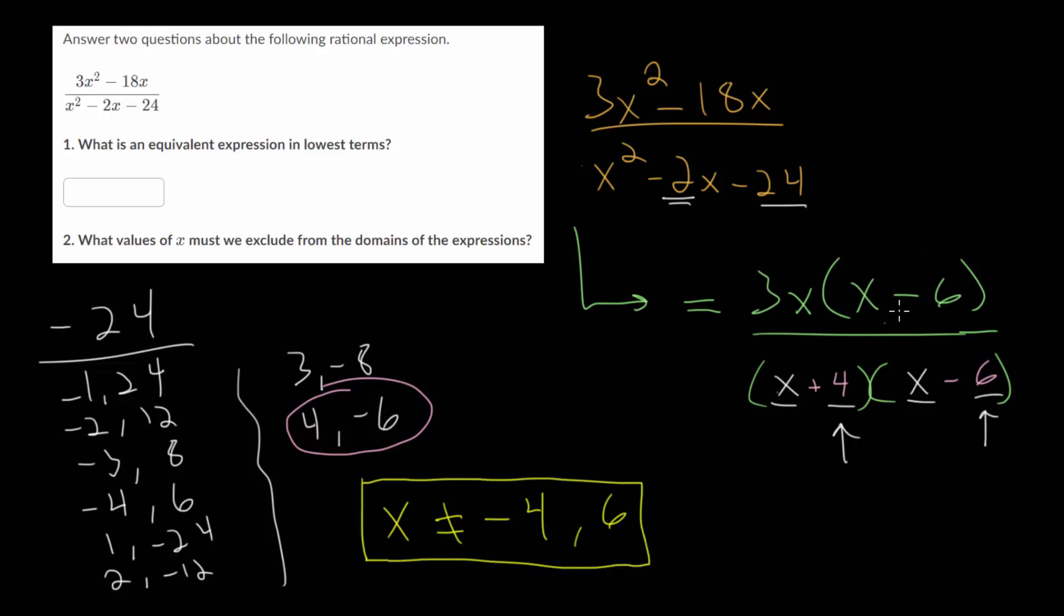To simplify this to lowest terms, you just want to recognize that you have x minus 6 up top and in the bottom. So these x minus 6 factors will cancel each other out since something divided by itself is always equal to 1. Our final rational expression in lowest terms is 3x divided by x plus 4. That's our final answer.